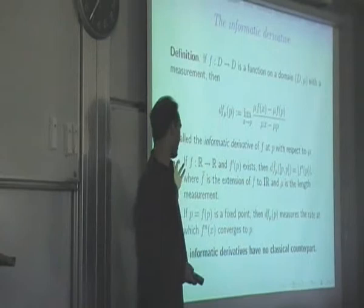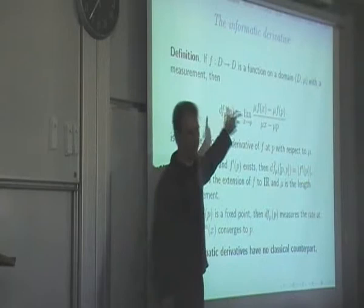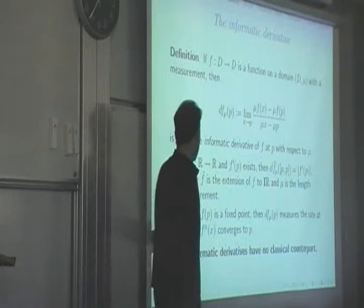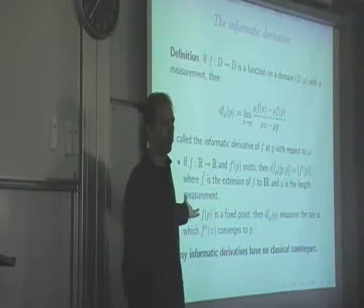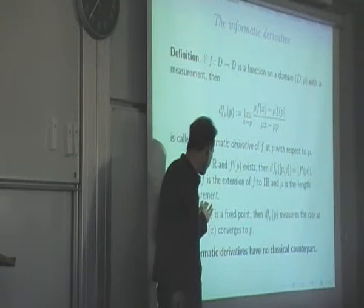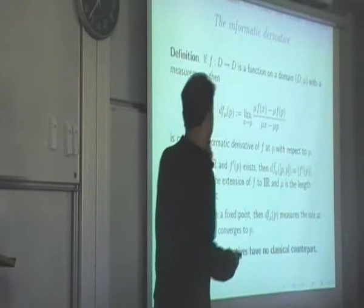The basic idea is that mu is like a variable on a domain — domains don't have variables on their own, so you give them one, and then you can do calculus. It does generalize the classical derivative: if you take an ordinary function from the reals to reals, extend it to the interval domain, then the extension has an informatic derivative with respect to length, and that is the normal derivative F-prime. There are also many things that have derivatives that are not classical in any sense — any function with a fixed point on a domain. You can measure the rate at which a function converges to a fixed point.